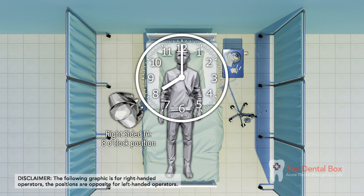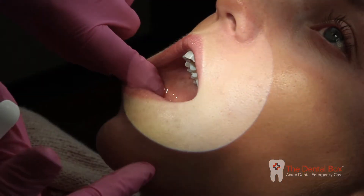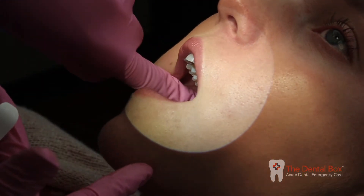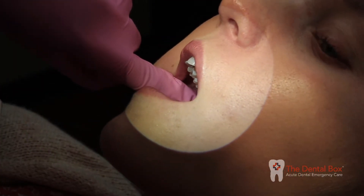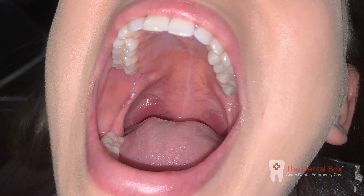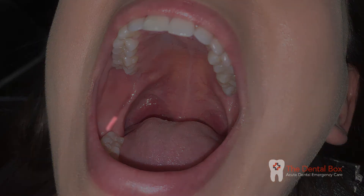Position the patient supine if possible. For a right-sided IA nerve block, sit facing the patient at an eight o'clock position. For a left-sided IA nerve block, sit facing the same direction as the patient at a ten o'clock position.